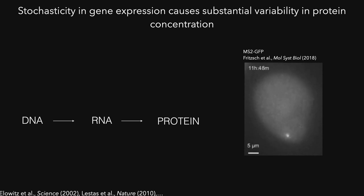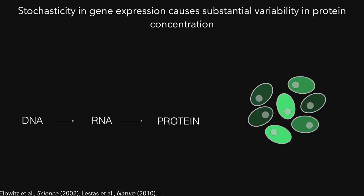As a consequence of this, gene product concentrations — both RNA and protein concentrations — can fluctuate very strongly over time but also between cells in an isogenic population. A key question in the biological noise field has been how cells can protect their biochemical programs against such gene expression noise.